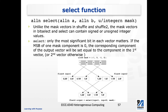The select function is similar to the shuffle function. Select and its bit version, bitselect, can be used to select certain elements from two vectors and use those to build a new vector. Unlike the masked vectors in shuffle and shuffle2, the masked vectors in bitselect and select can contain signed or unsigned integer values. For the select function, only the most significant bit in the mask elements matters.